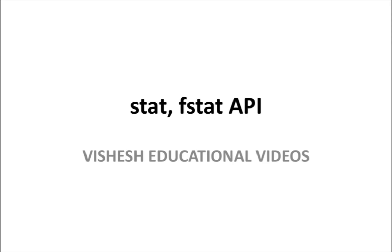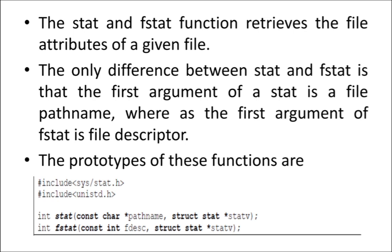Let me begin the explanation of STAT and FSTAT. These APIs are mainly used to retrieve the attributes of a given file. For example, file attributes can be the name of the file, ID of the file, last access time, and last modified time. If you want to retrieve this information, you can use the STAT and FSTAT APIs.